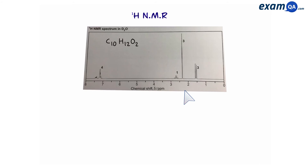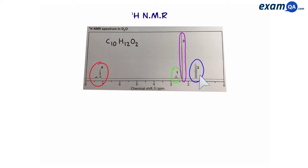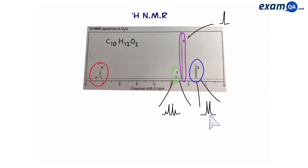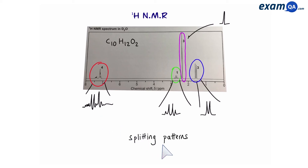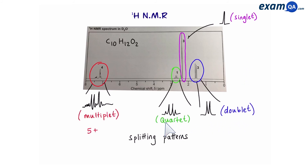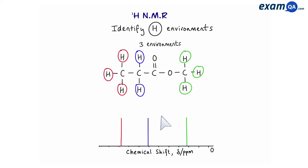Going back to the example at the start of the video, we had a spectrum for C10H12O2 with four different peaks, meaning four different environments. If you look closely, the peaks have smaller peaks within them — splitting patterns. One has four peaks, one has two, one is just one peak, and one has many tiny peaks. These are called a quartet, a doublet, a singlet, and a multiplet respectively. We use the n plus one rule to work out splitting patterns, and after applying it our spectrum will look quite different.